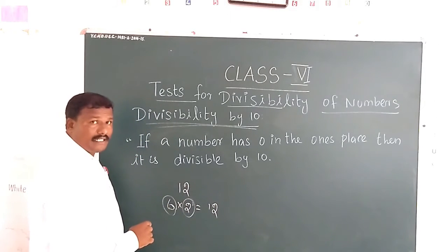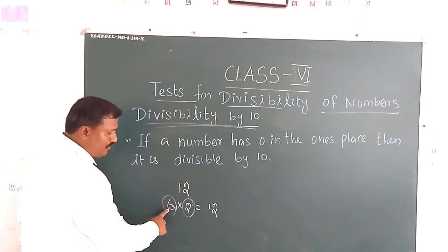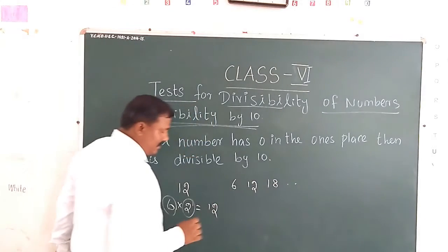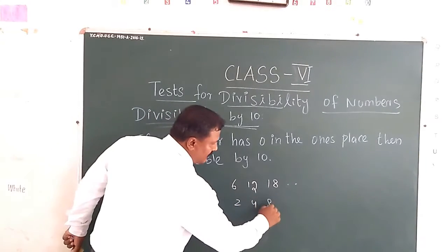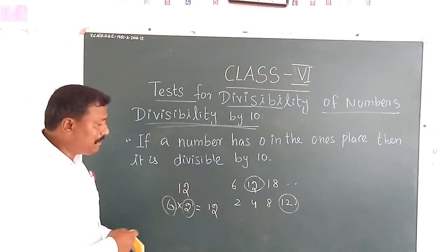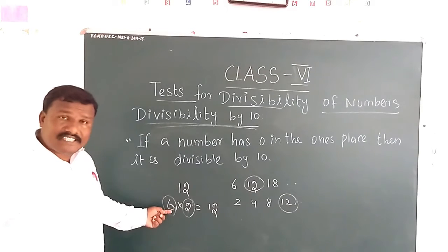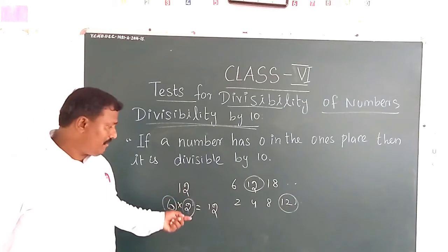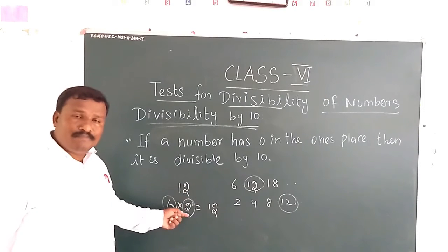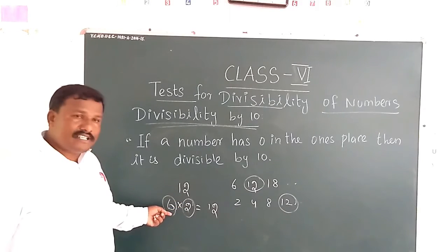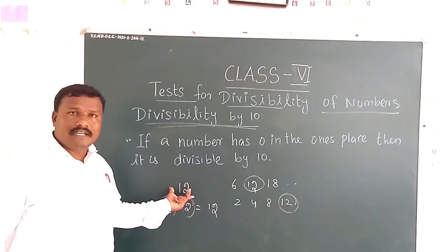12 is completely divisible by both 6 and 2. If you see the multiples of 6: 1×6=6, 2×6=12, 3×6=18, and so on. If you see the multiples of 2: 2, 4, 8, 12, and so on. So 12 appears in both, meaning both 6 and 2 are factors of 12.